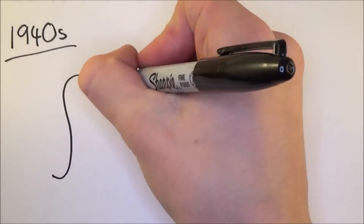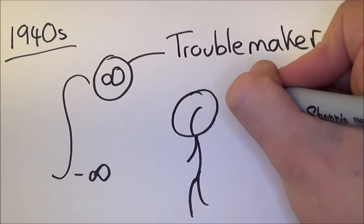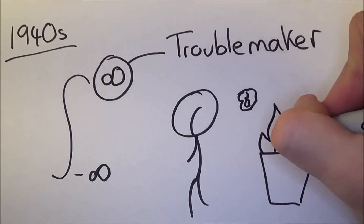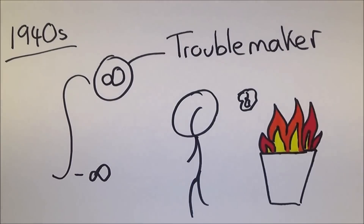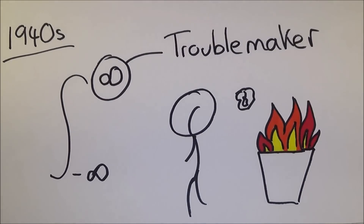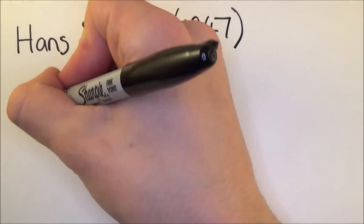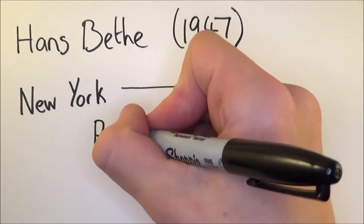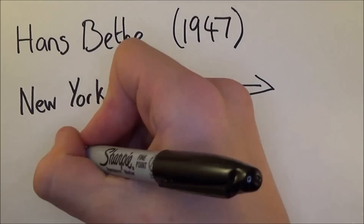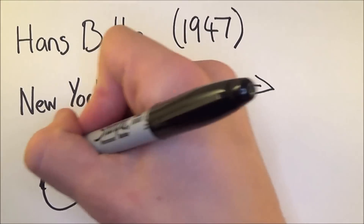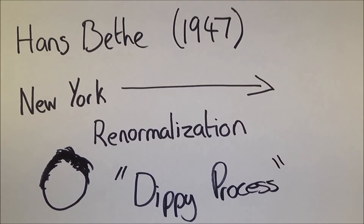It all started with Paul Dirac in the 1920s, and he was the first to put together an equation that connected energy and matter and showed how they would interact to produce light and other electromagnetic radiation such as ultraviolet and infrared. But in 1940, physicists ran into issues with infinity, which made all the calculations meaningless and they nearly abandoned the theory, until a man named Hans Bethe came along. In 1947, travelling from New York, he developed a procedure called renormalisation, which basically takes the infinity out of the equation.